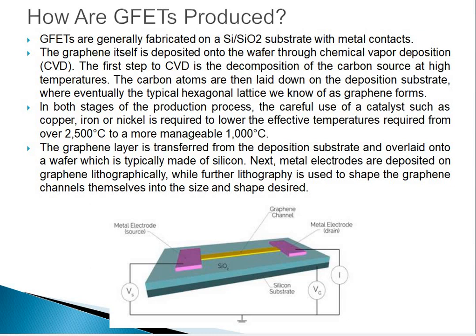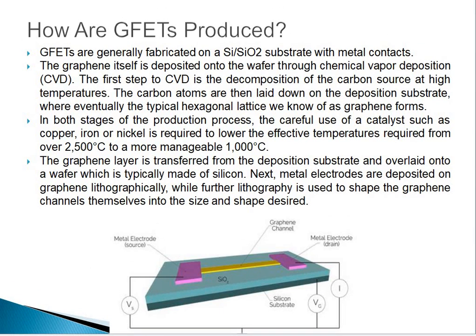The graphene layer is transferred from the deposition substrate and overlaid onto a wafer, which is typically made of silicon. Metal electrodes are deposited on the graphene lithographically, while further lithography is used to shape the graphene channels themselves into the desired size and shape. This is the structure of the graphene field effect transistor. You can see in the presentation: this is the graphene layer deposited on the SiO₂ surface, this is the silicon material, this is the SiO₂, and these are the metal contacts for the drain and the source.